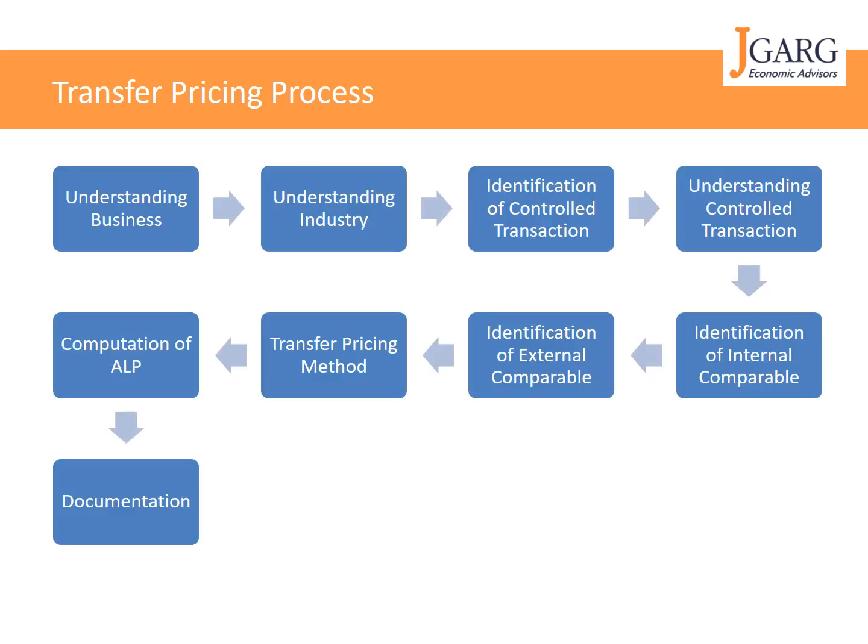Here is the transfer pricing process on your screen. You can follow these steps in order to start and finish a transfer pricing assignment. There could be more steps, but based on my experience, I feel we can broadly divide this transfer pricing process into nine steps: first, understanding business; second, understanding industry; third, identification of controlled transactions; fourth, understanding controlled transactions; fifth, identification of internal comparables; sixth, identification of external comparables; seventh, transfer pricing method; eighth, computation of ALP; and ninth, documentation.